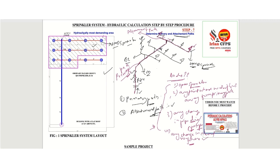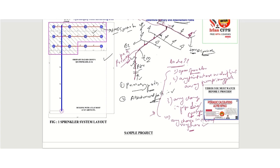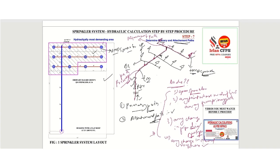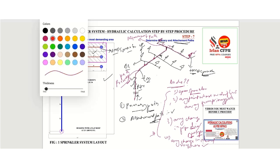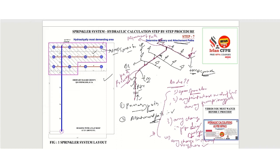In between there are two additional tapping points; one tapping is on the primary path and these two will come under attachment paths. Now we'll try to write the nodding numbers. I will use red color. So this will be node number one — since these are the sprinklers — two, three, and four. This node will be five, this will be six, seven, eight, and this node will be nine. And here this node will be ten.